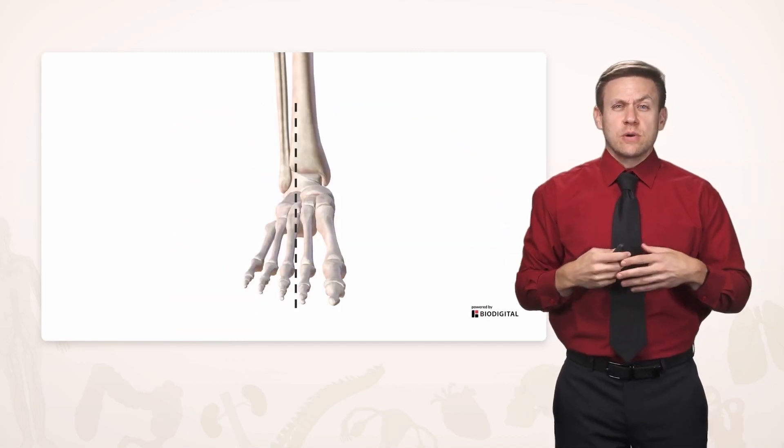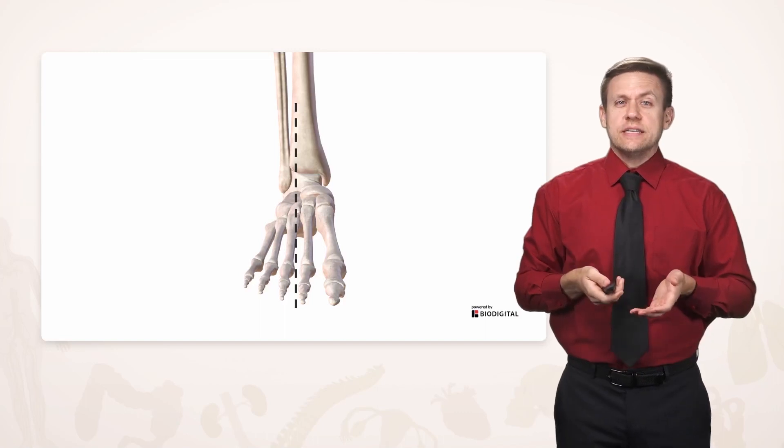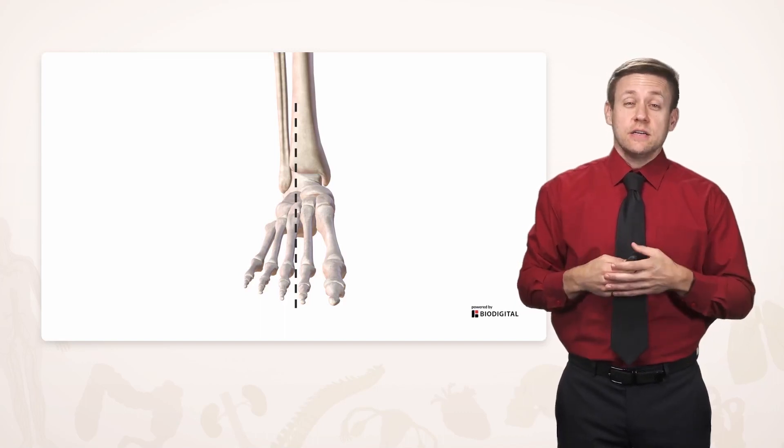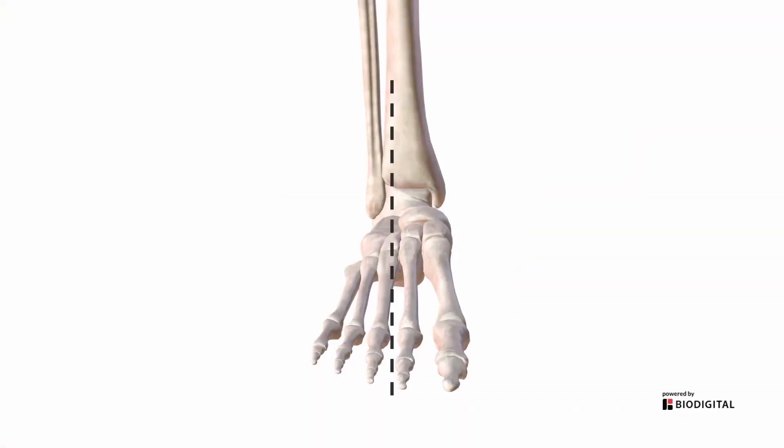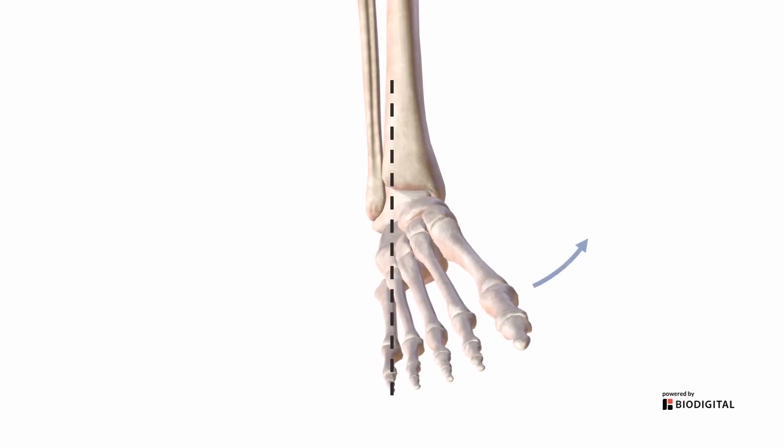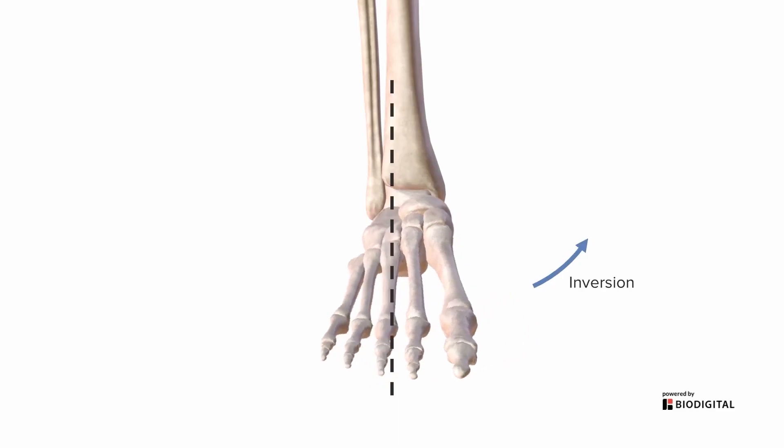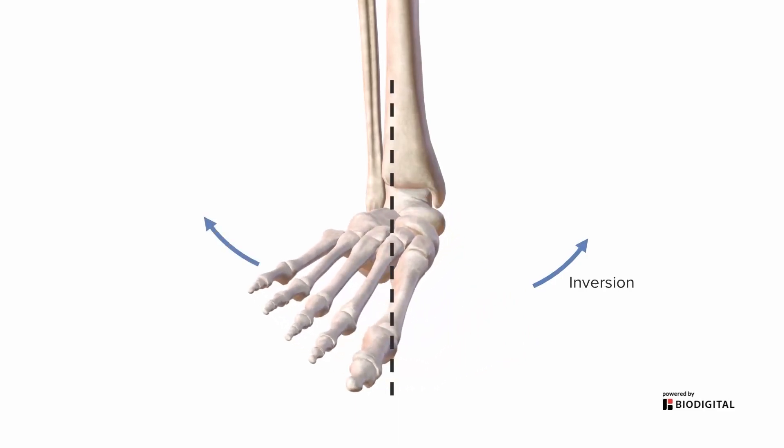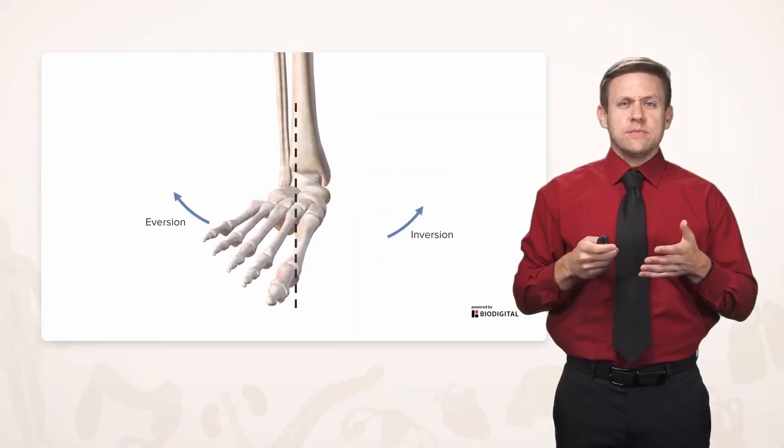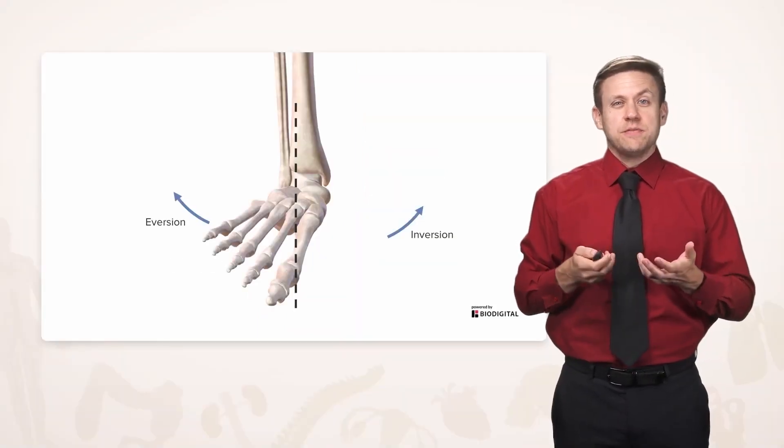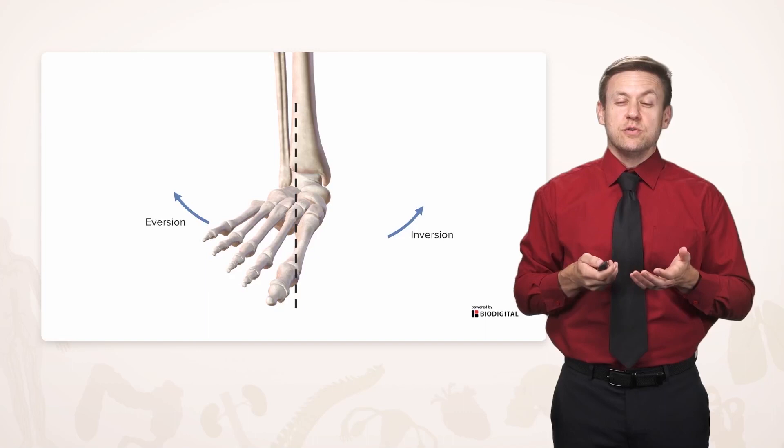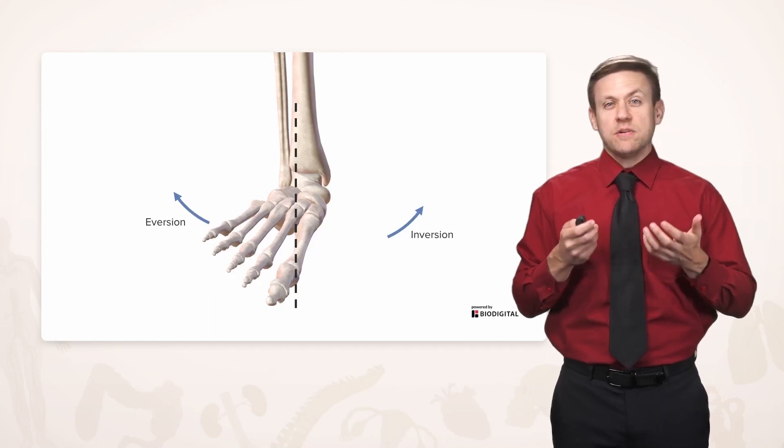We also have some movements that are relatively unique to certain joints that we'll talk about as we get there. One example is a type of joint that exists at the ankle. And there's an ability to bring the toe towards the body or medially, and that's called inversion. And then if we move the foot outward, we call that eversion. And this is something that exists because of the shape of the joint here that allows this movement, but it's not something that's capable of every joint.